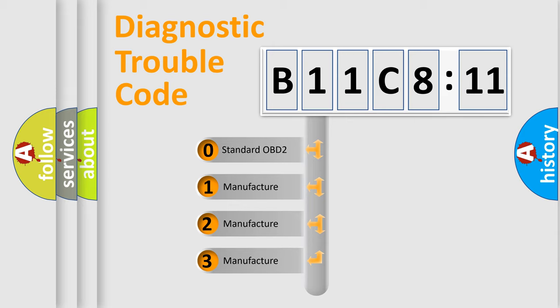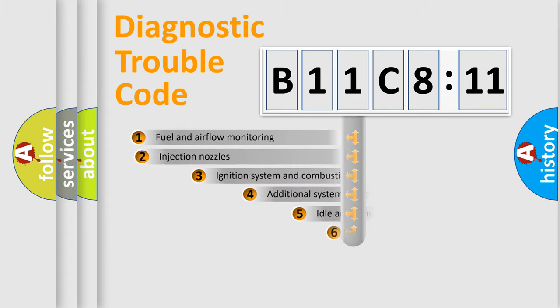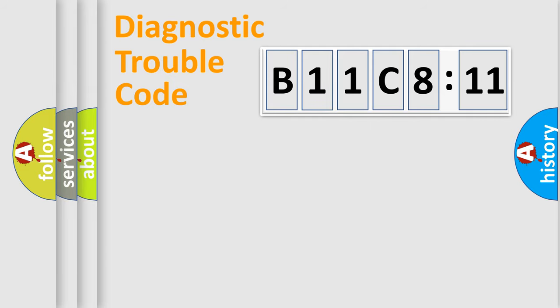If the second character is expressed as zero, it is a standardized error. In the case of numbers 1, 2, 3, it is a car-specific error. The third character specifies a subset of errors. The distribution shown is valid only for the standardized DTC code.